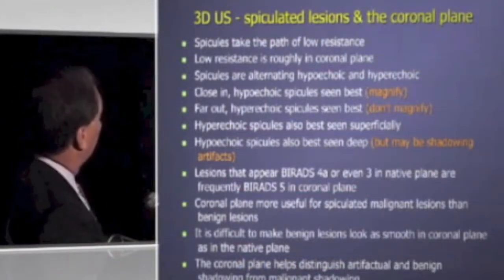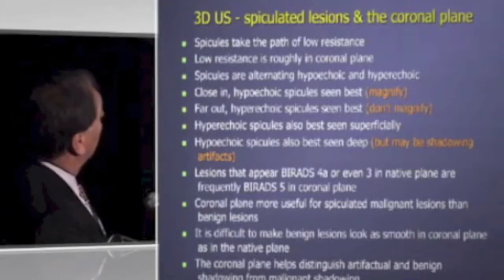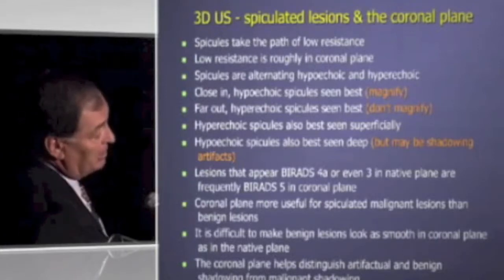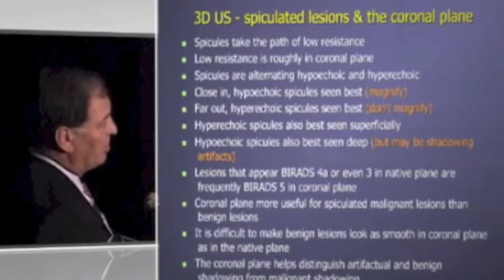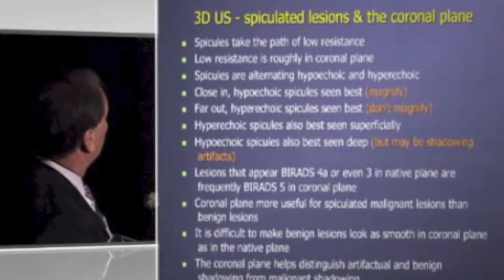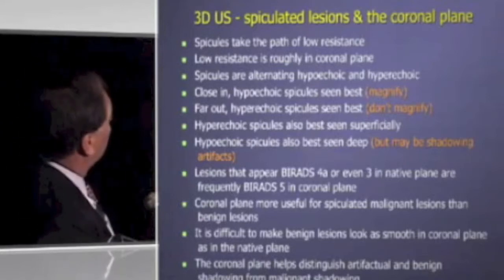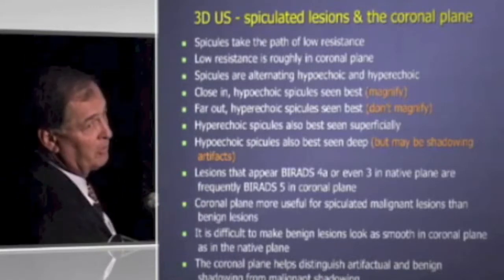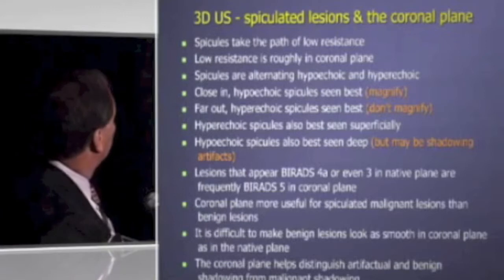They're alternating hypoechoic and hyperechoic. The hypoechoic spicules are close in and you have to magnify to see them. The hyperechoic ones extend out into the tissues, and sometimes it's hard to tell whether it's just a straight Cooper's ligament, but you see those best non-magnified. They're also seen better superficially. Deeper, you tend to see the hypoechoic spicules, but you have to be careful because shadowing off Cooper's ligaments can simulate hypoechoic spicules deep.